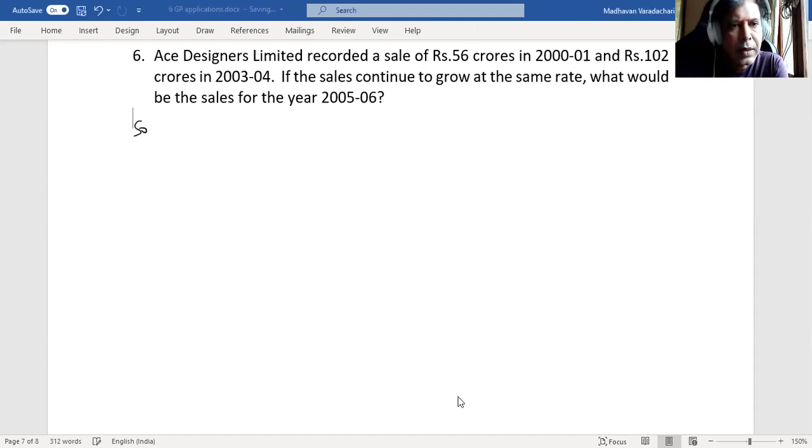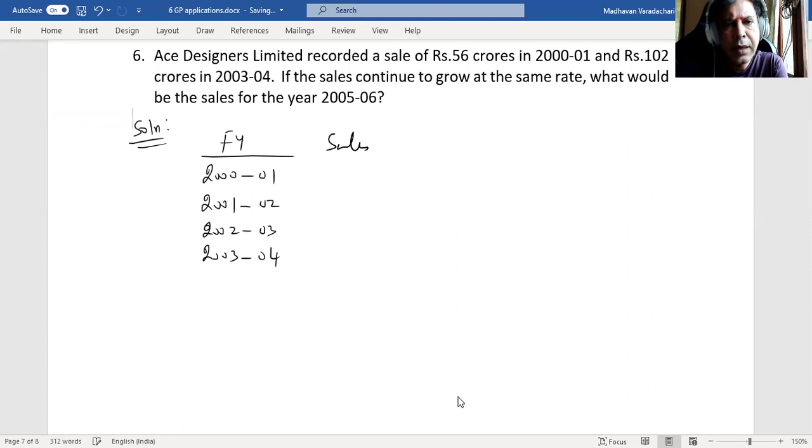Let us consider the financial year in a column: 2000-2001, the next financial year should be 2001-2002, 2002-2003, 2003-2004. The sales is given in crores of rupees. The first one is given as 56, we don't know about the second and third financial years, but we have the value for 2003-2004 as 102.